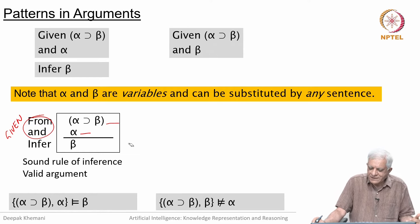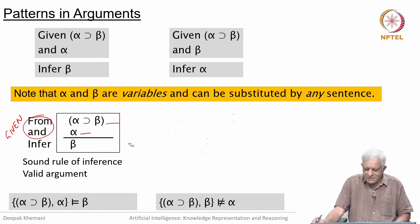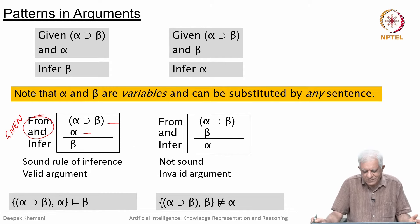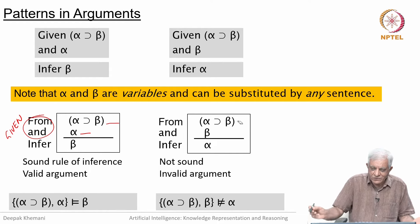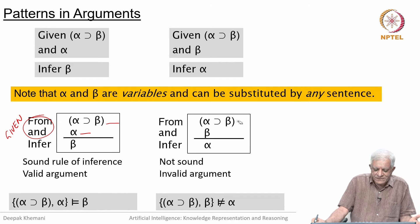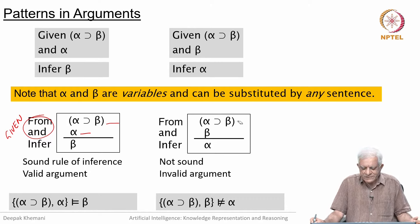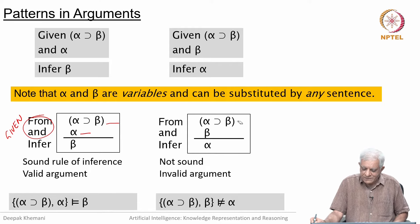If you give us alpha implies beta and you give us beta and we infer alpha, that is also a pattern, but it is not a sound rule of inference — it is not a valid argument. On the surface the patterns look similar: you are given two well-formed formulas and inferring a third. But inferring beta from alpha implies beta and alpha is valid, while inferring alpha from alpha implies beta and beta is not sound — alpha will not always be true.